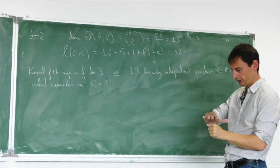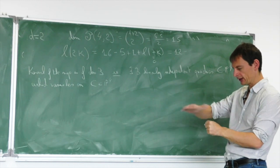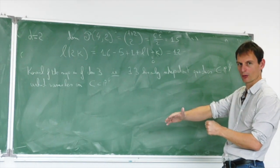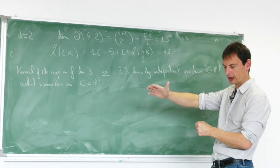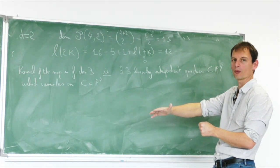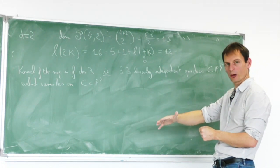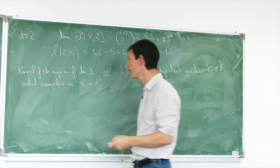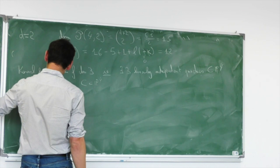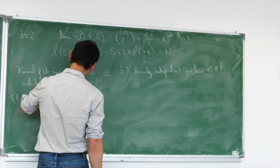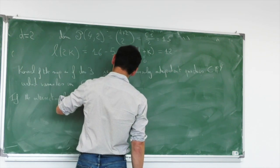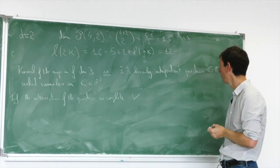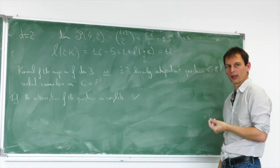Three quadrics in P^4: each quadric should cut down one dimension, so one quadric gives a dimension-3 object, two quadrics give dimension 2, three quadrics give dimension 1 — my curve — so I should be fine. But this works only if the quadrics behave nicely, forming what we call a complete intersection. If the intersection is complete, then C is described as the locus of intersection of these three quadrics.